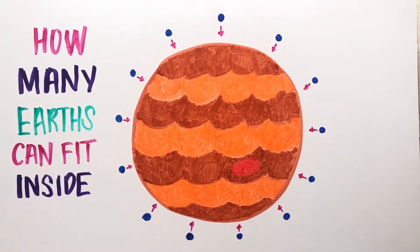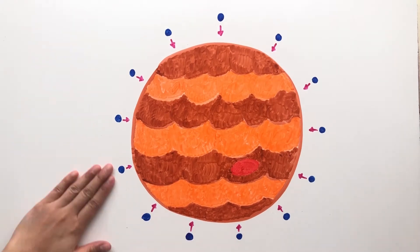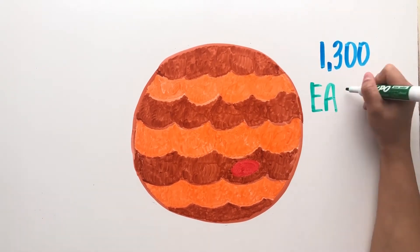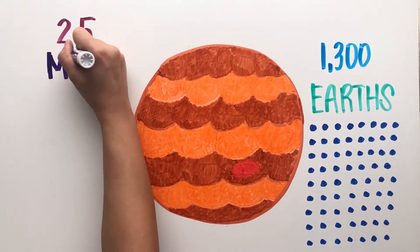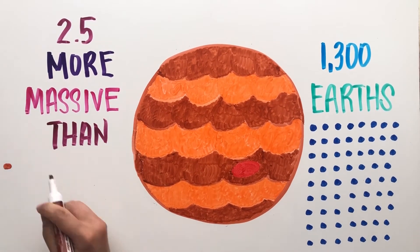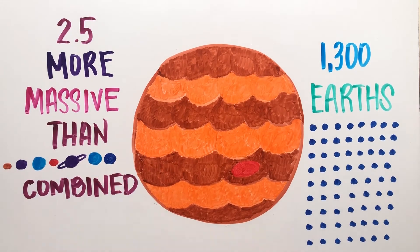How many Earths can fit inside Jupiter? About 1,300 Earths can fit inside Jupiter comfortably, and it's 2.5 times more massive than all of the other planets in the solar system combined.